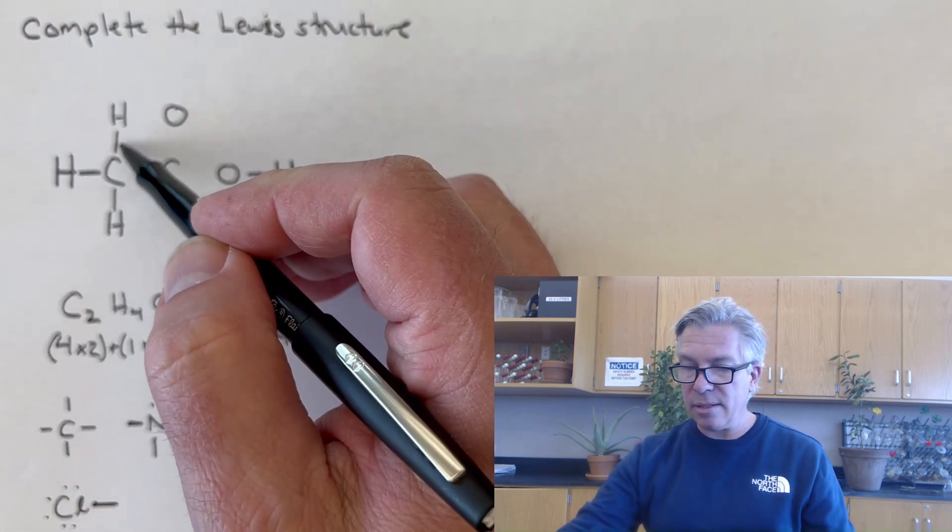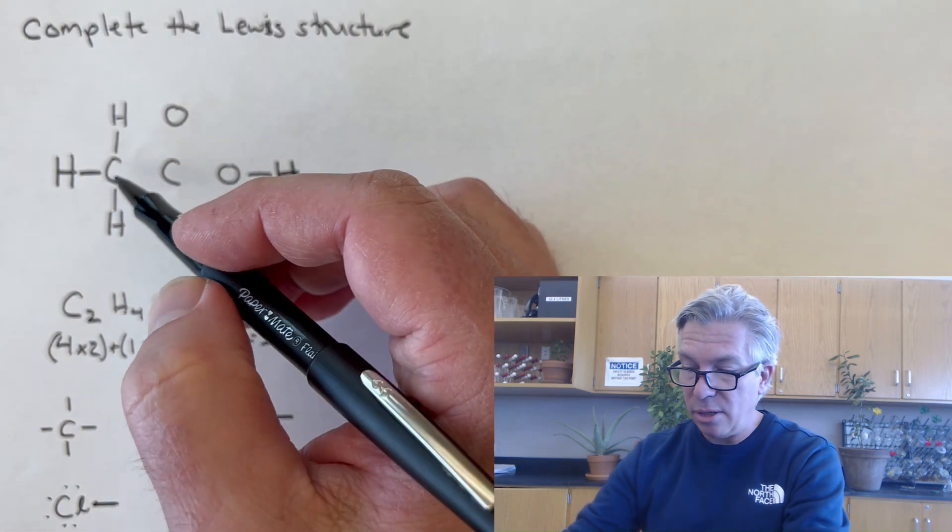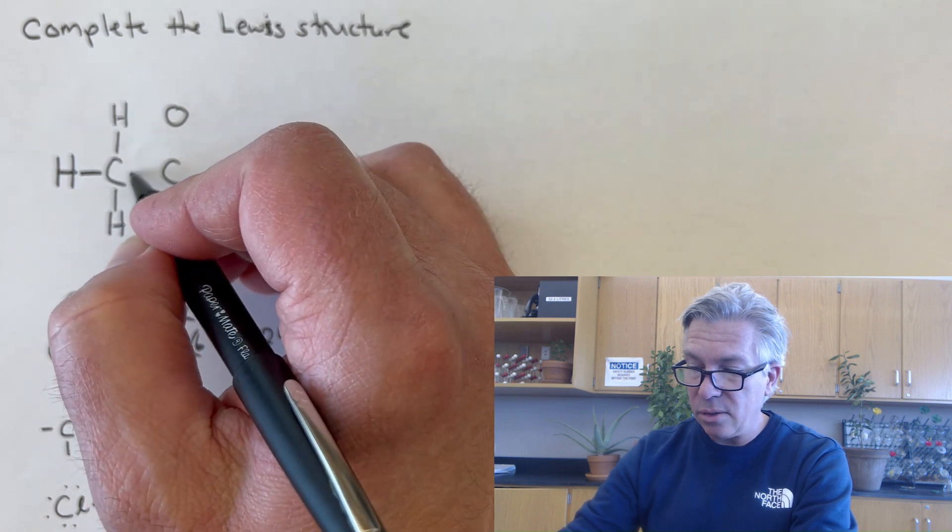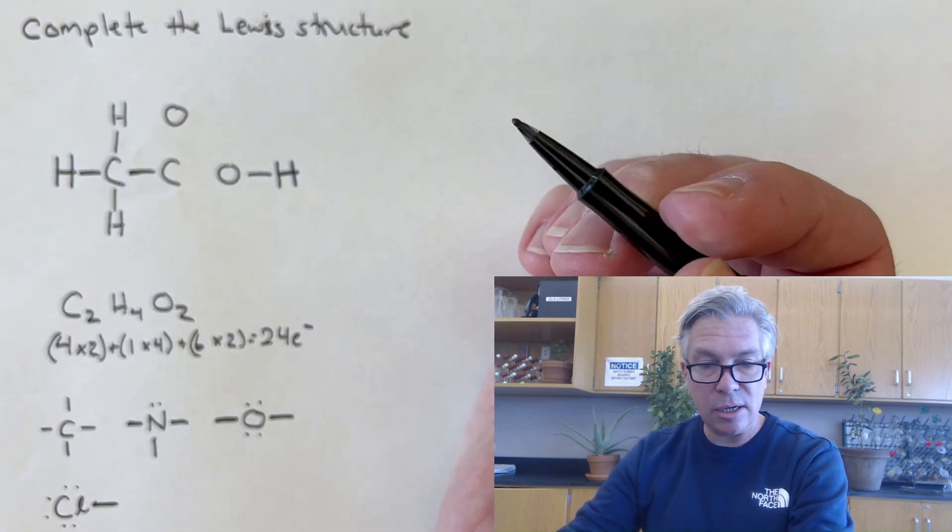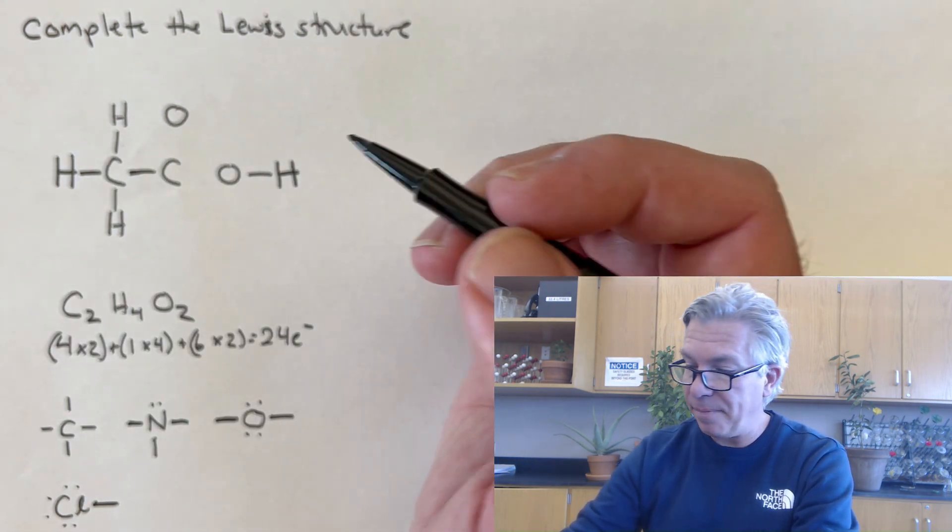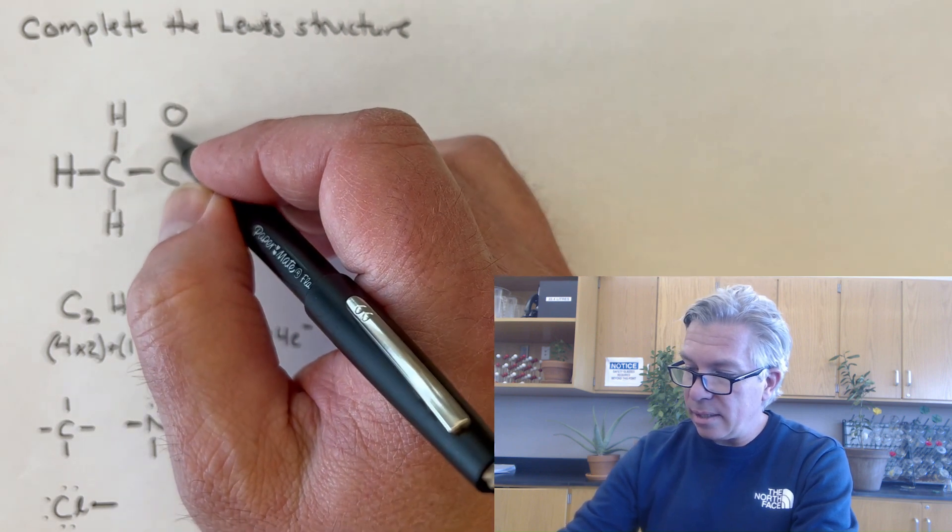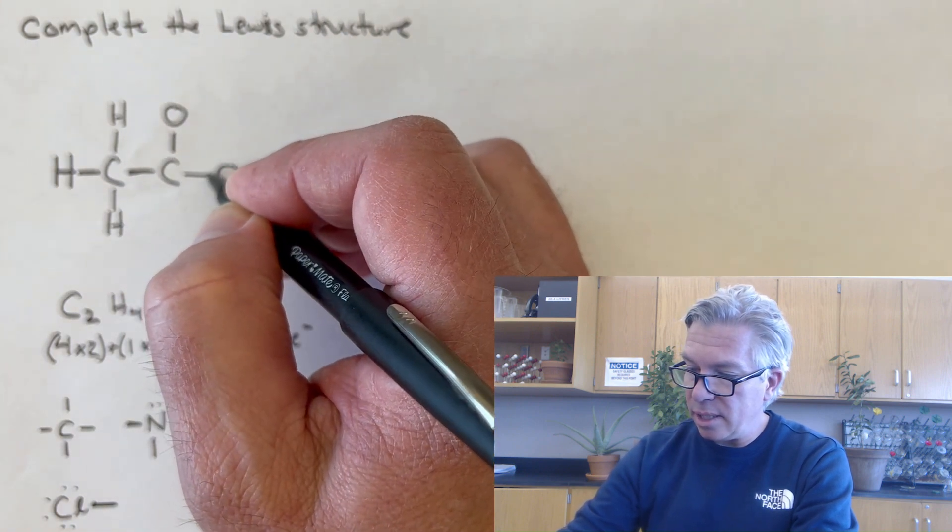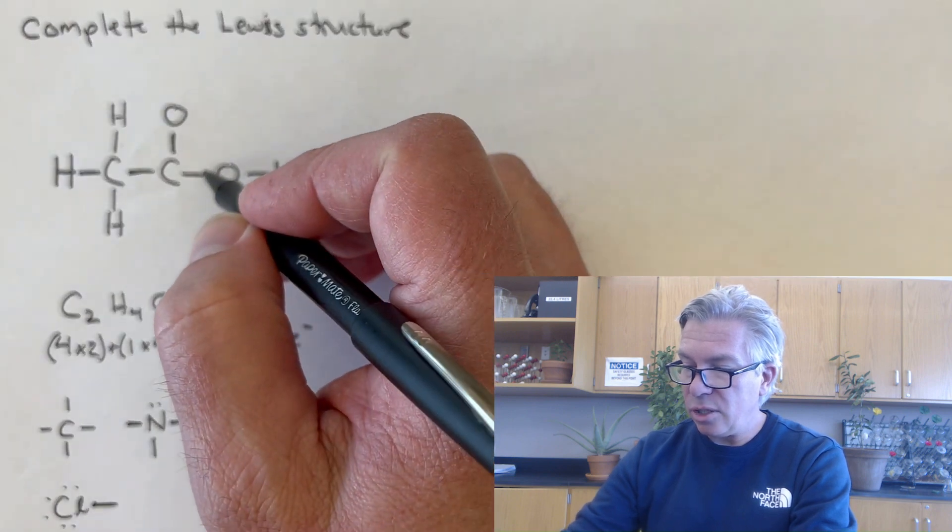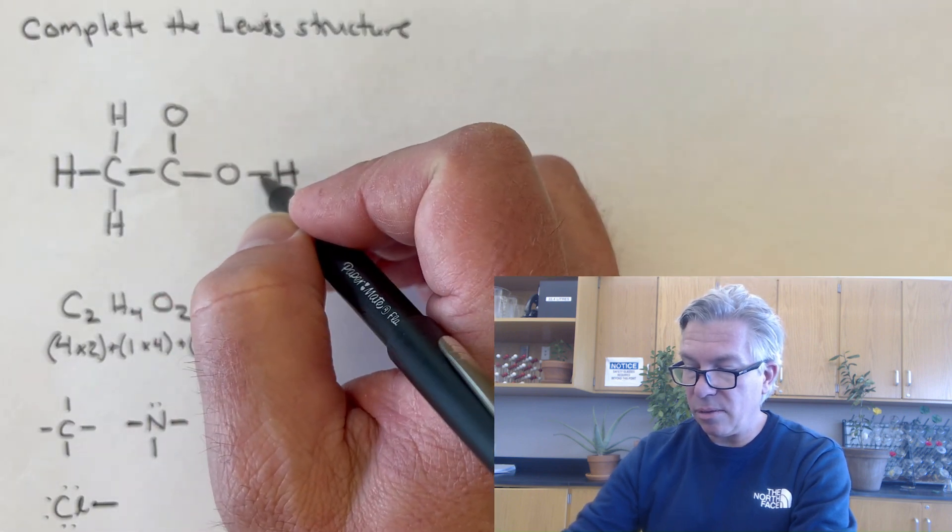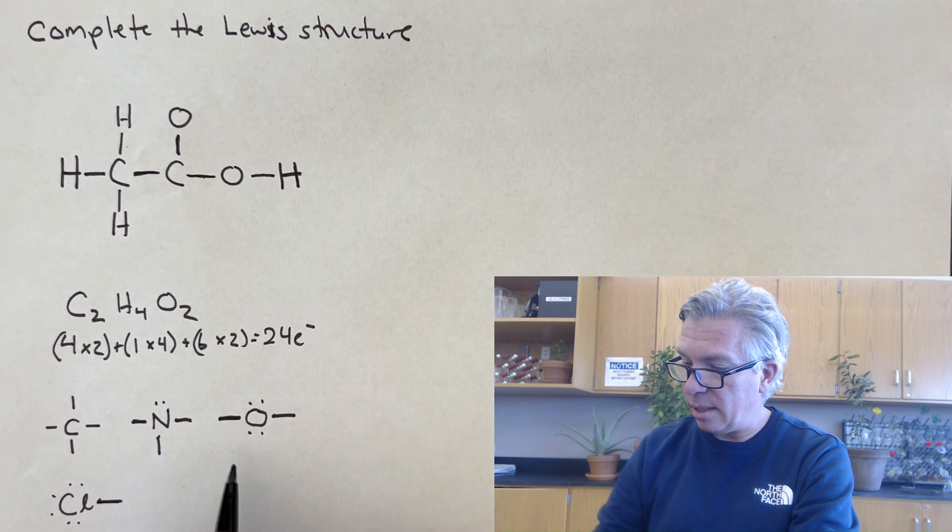So this carbon should have four bonds. It has three already. So let's make a bond to the neighboring carbon. I'm going to connect it. And then I can connect a single bond up here and a single bond there just to get everything connected to each other. This oxygen is nice because it has two bonds already.